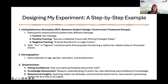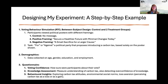To give an example of how I designed my experiment: I chose a randomized control trial methodology with a between-subjects design, with one control and two treatment groups. Participants viewed a political poster with a framing. The control group received no framing. Treatment one received positive framing — 'Secure a healthier future with minimal change today.' Treatment two received negative framing — 'A small sacrifice for a larger course.' Then they were asked to vote for or against a political party proposing carbon tax, based only on the poster they were shown.